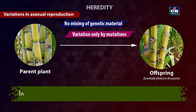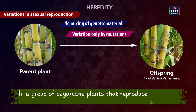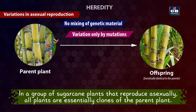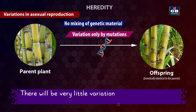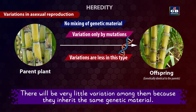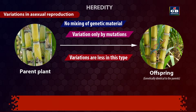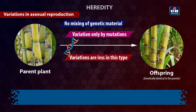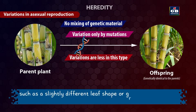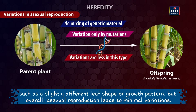For example, in a group of sugarcane plants that reproduce asexually, all plants are essentially clones of the parent plant. There will be very little variation among them because they inherit the same genetic material. If a mutation occurs in one plant, it might result in a small change such as a slightly different leaf shape or growth pattern.